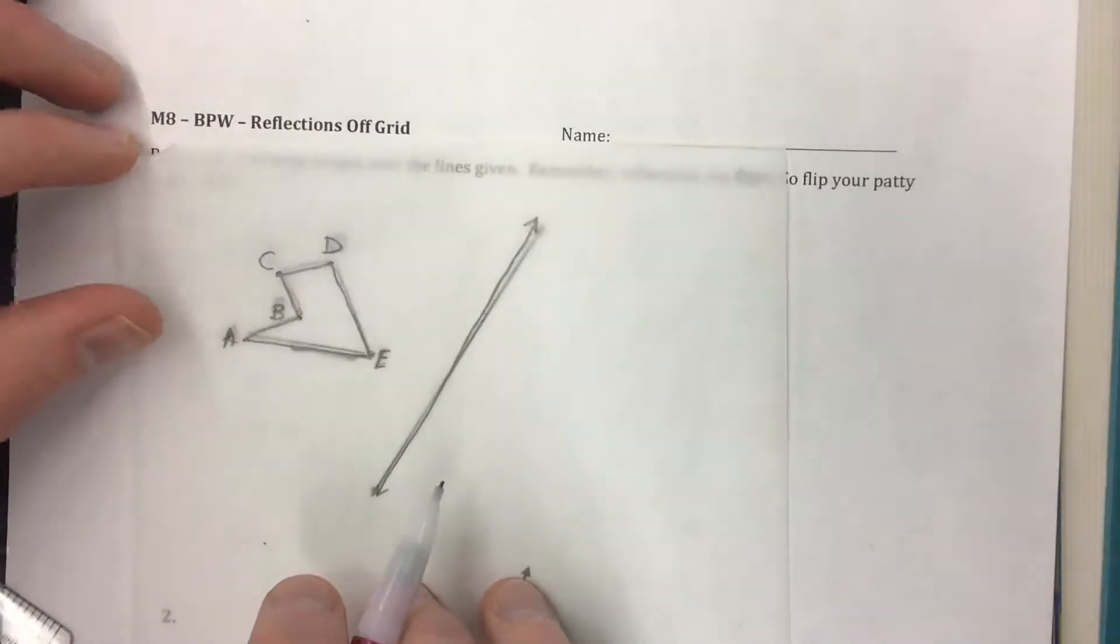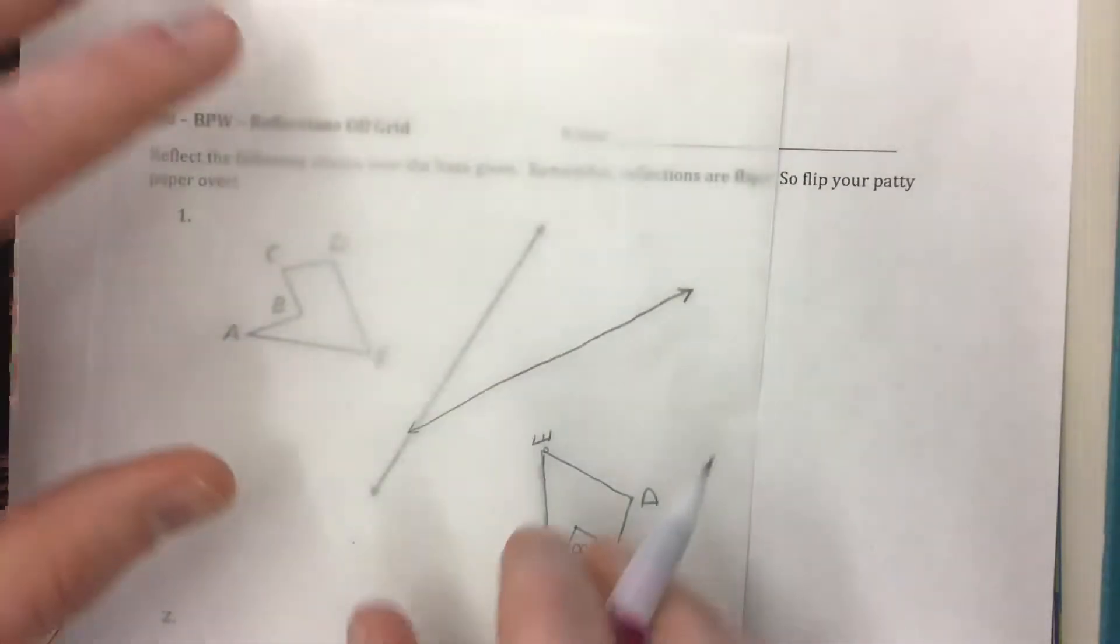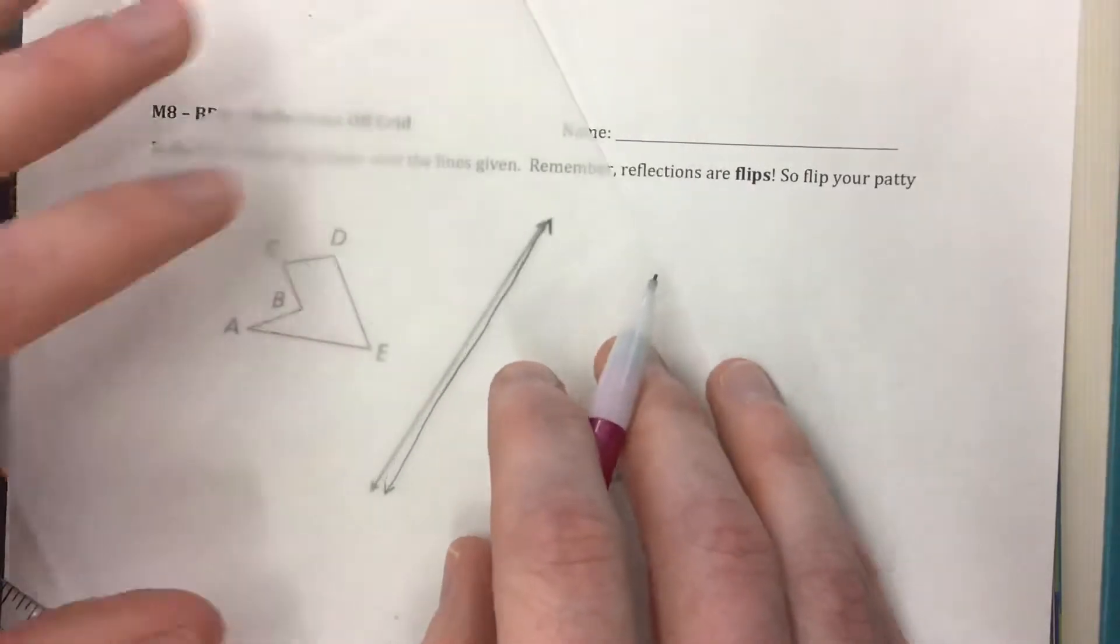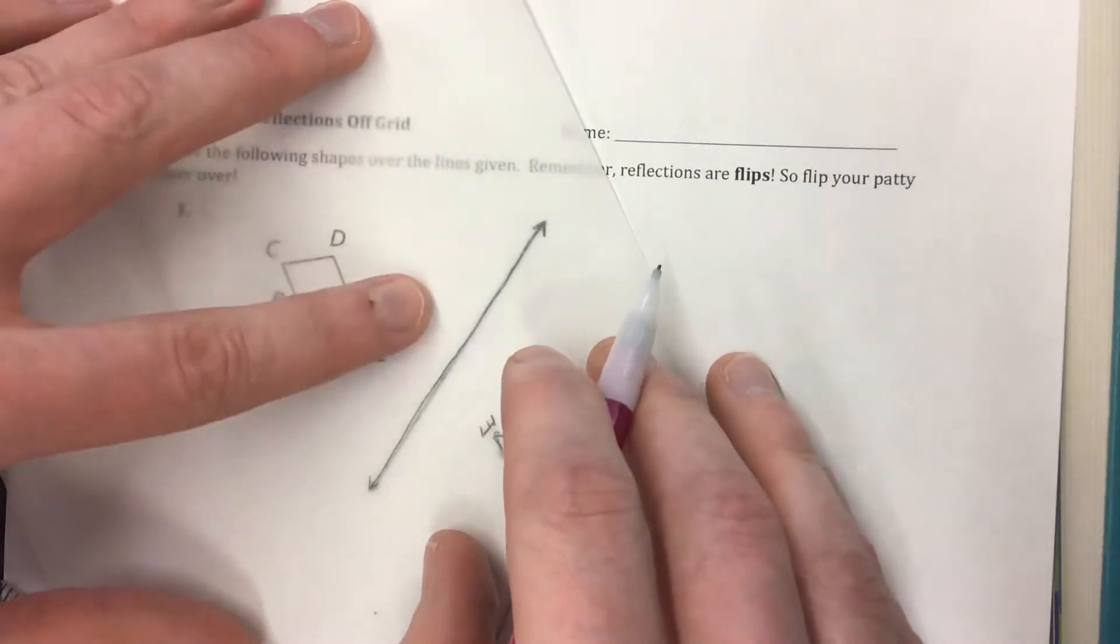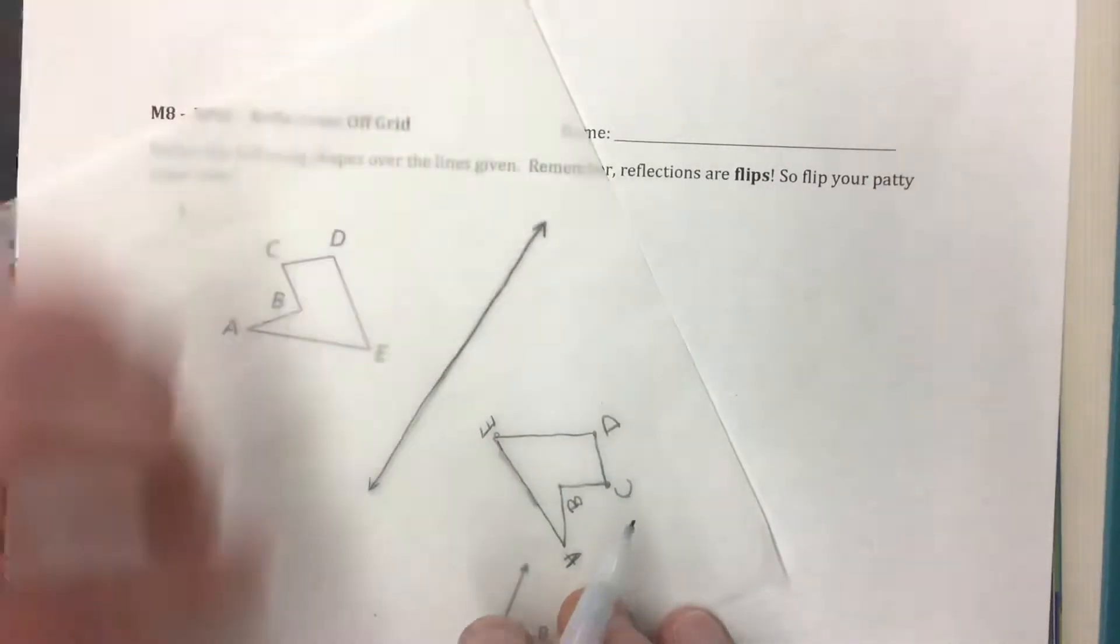Then to do a reflection we're going to flip the paper over to flip it over the line. You want to make sure when you do this you line up the line back to where it started because the line does not change. That should be where the new location would be after this flip.